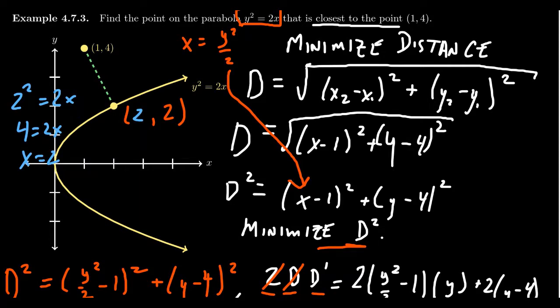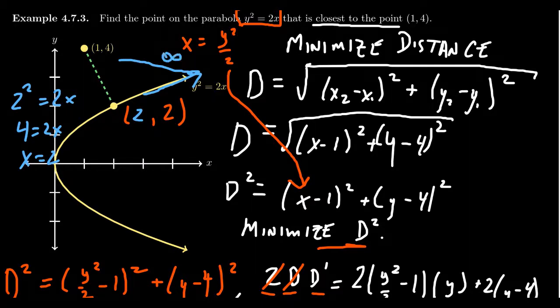2 comma 2 seems to be the best point there. In terms of domain, though, what would the domain of this thing be? Like, how close can we get or how far can we get? Well, if you follow down this trajectory down here, you can get arbitrarily farther and farther away. Turns out if you go down this path, the distance from 1, 4 is going to go to infinity.